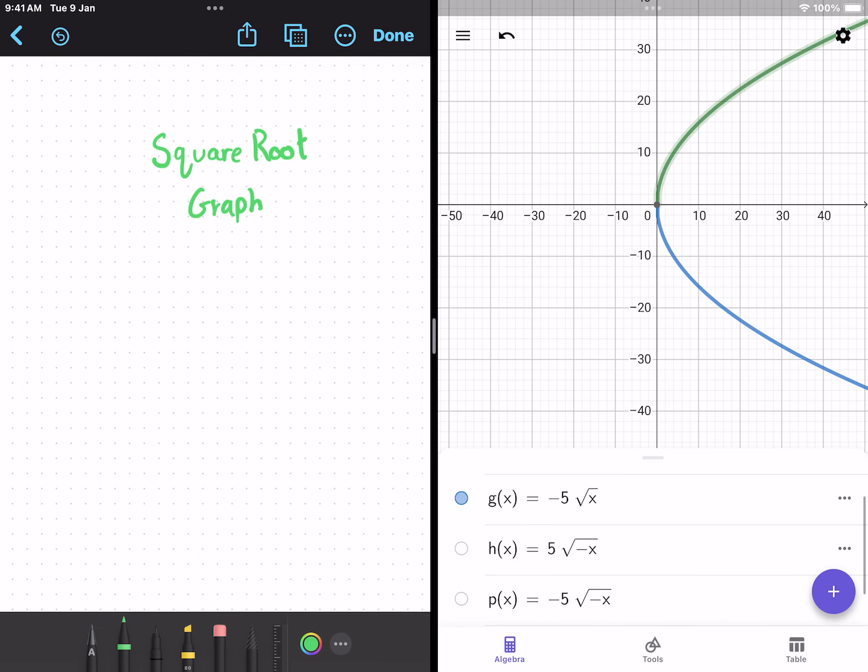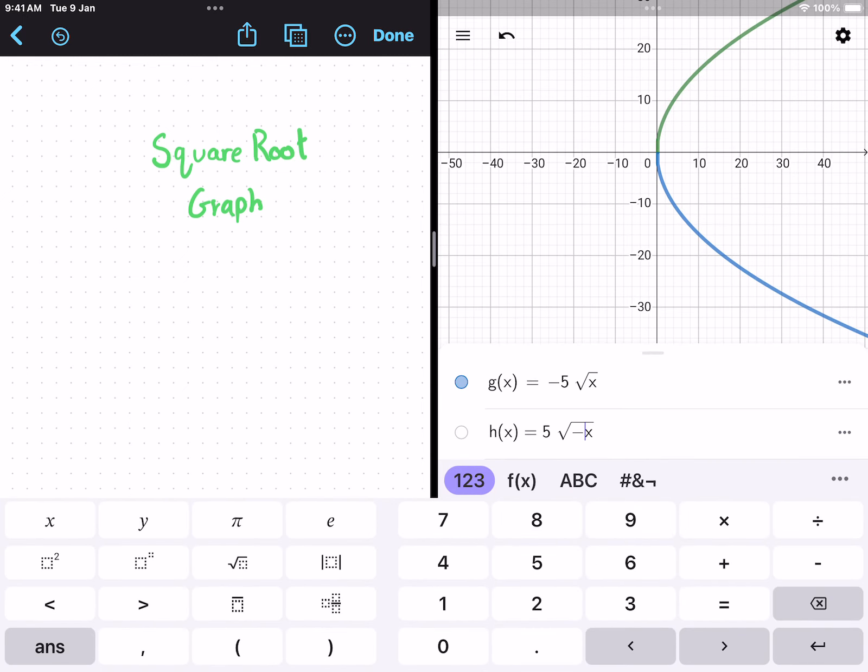Now, the last one, to reflect it on the fourth quadrant, we'll have to reflect it on both the x-axis and the y-axis. As you can see, it's both negative - the y is negative and the x is negative, so you have to reflect it on both the x and y, and you can see it gets reflected. You can see the negative 5 and the negative x.